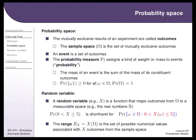A random variable is where we actually add numbers to outcomes — it is a mapping from the outcomes to the real numbers. So when we say we want the probability that X is between zero and five, what we actually mean is the probability of the subset of the sample space that causes the random variable to map those outcomes between zero and five. This is the notation used in more advanced probability courses; in practice we use shorthands, but that's what they formally mean.